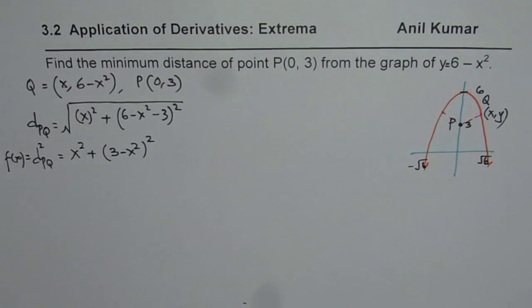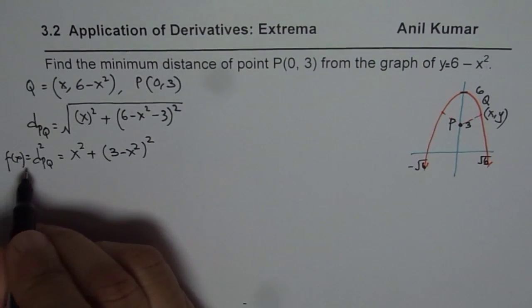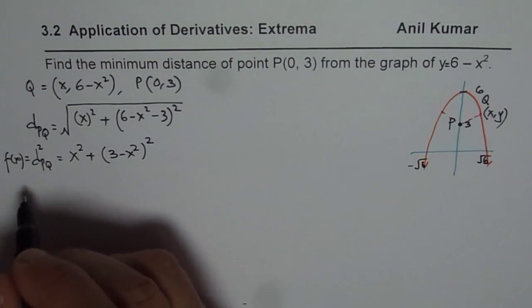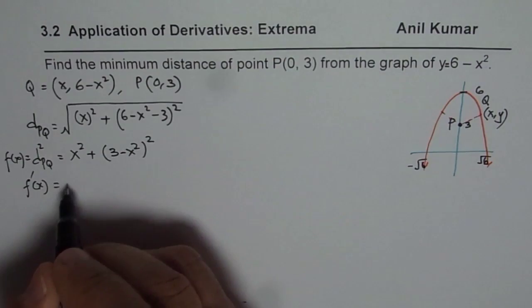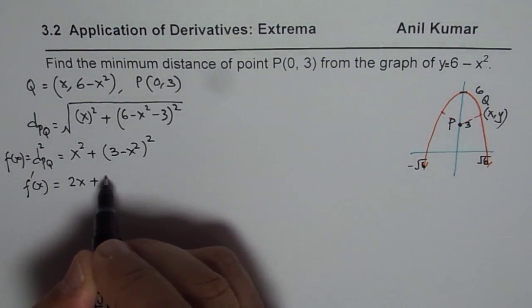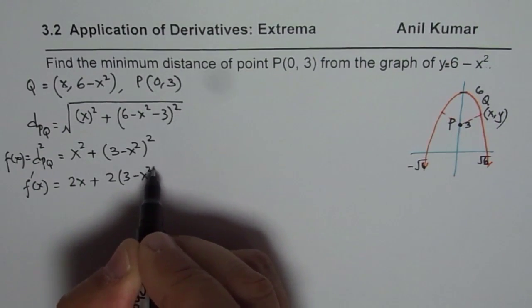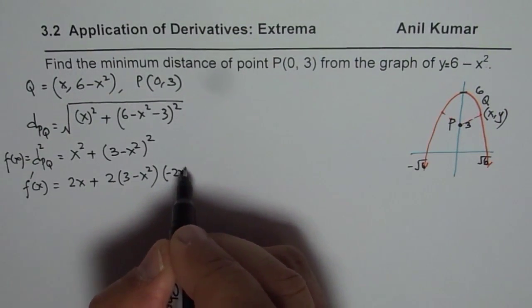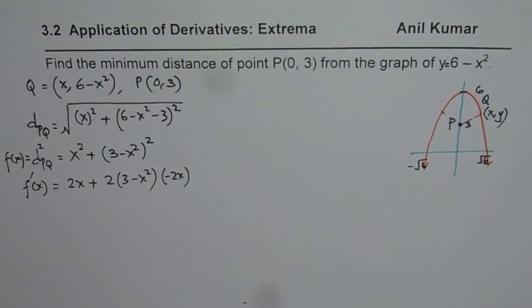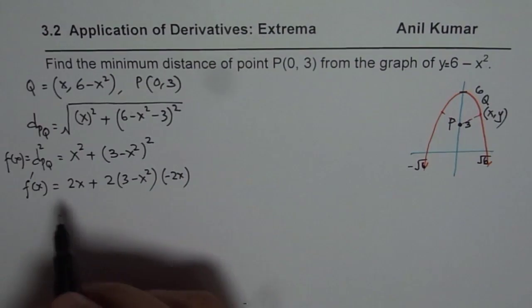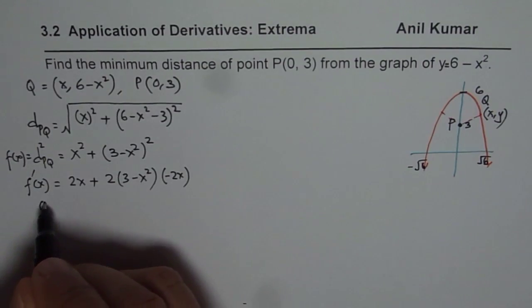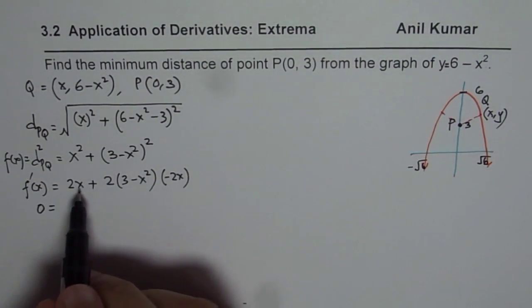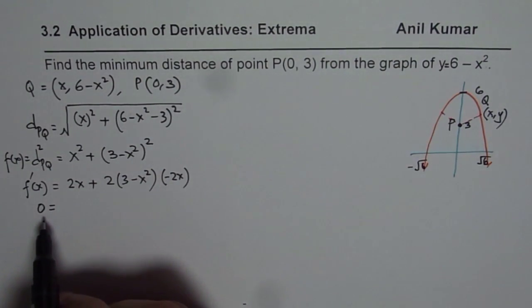Now let us find the derivative of this function to get the critical points. The derivative f'(x) equals 2x plus 2(3 minus x squared) times the derivative of the inside function, which is minus 2x. The derivative is defined everywhere, so the only critical points occur when f'(x) equals 0.